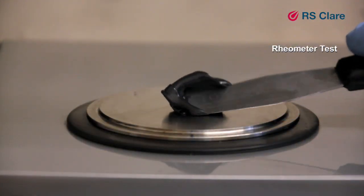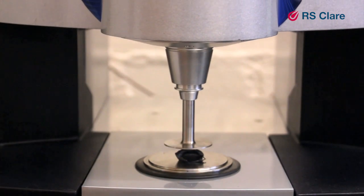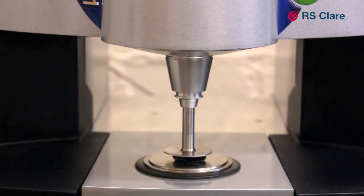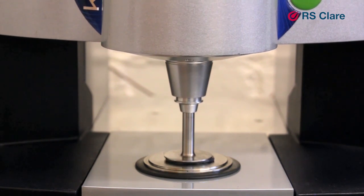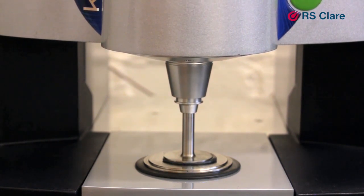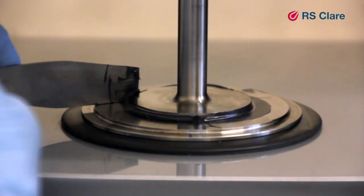First of all, the grease is loaded onto the bottom plate. Then the circular disc, called the cone, is lowered down towards the plate. The distance between the cone and the plate is set to 0.15mm. The excess grease is removed.